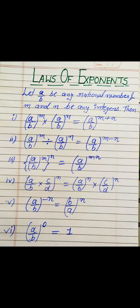So in multiplication, power adds if they have the same base, and in division the power subtracts if they have the same base. The third law is power of a power: if a rational number (a upon b) has a whole power m and then again a whole power n, then this power of power will multiply — giving (a upon b) to the whole power m×n. The fourth law: if two rational numbers (a upon b) and (c upon d) have a whole power n, then this power n applies to both, giving (a upon b)^n × (c upon d)^n.